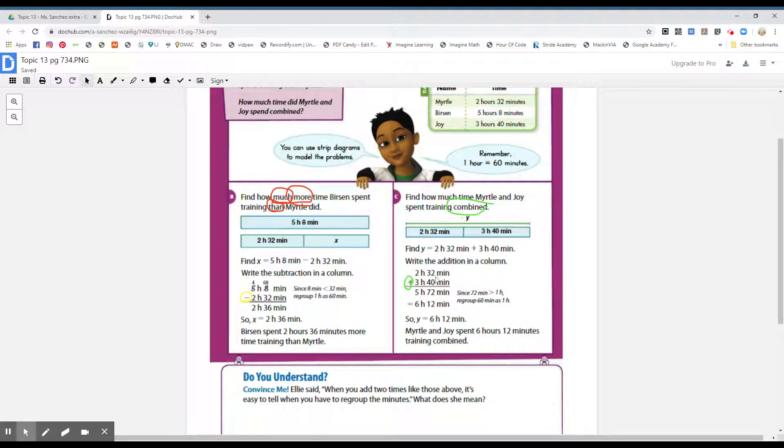And so when you add two hours, 32 minutes plus three hours and 40 minutes, you have five hours. So you have two plus zero is two, three plus four is seven, two plus three is five hours and 72 minutes. Remember boys and girls, for every hour, is 60 minutes. So you can regroup 60 minutes from the 72. So when you subtract 60 minutes from the 72, you add another hour and you're left with just 12 minutes. So Myrtle and Joy spent six hours and 12 minutes training combined.